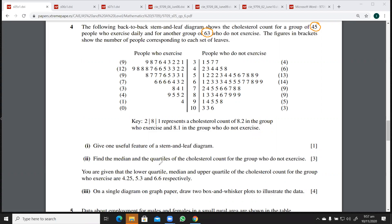Next, let's find the median and the quartile for the cholesterol count for the group who do not exercise. So now we have these 63 people. So let's find 63 plus 1 over 2, that is going to be 32. So the 32nd value is going to be the median first of all. So we can count from here, 4 plus 6 is 10, plus 13 is 23, 23 plus 14 is 37. So that means 32 is going to be over here. So 23 up to here,